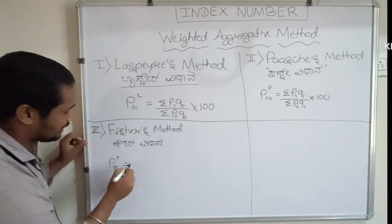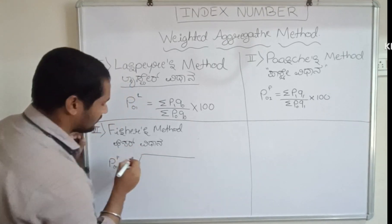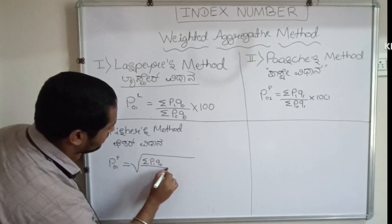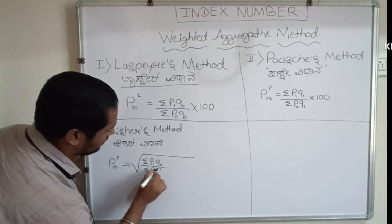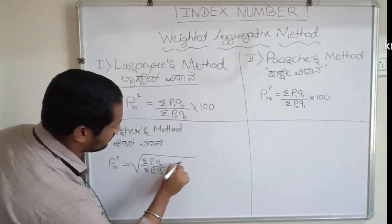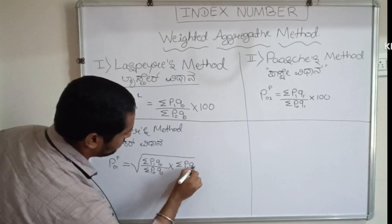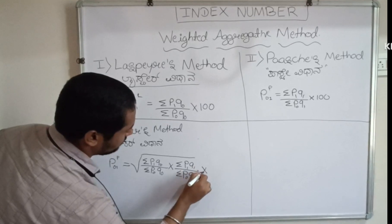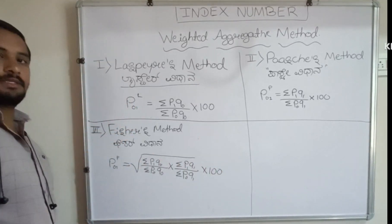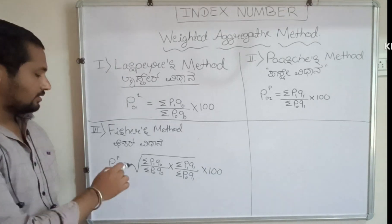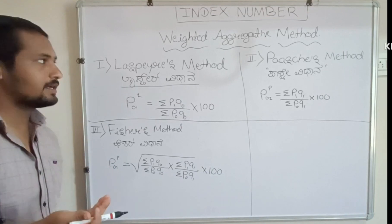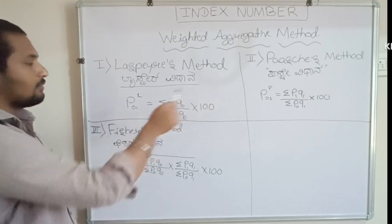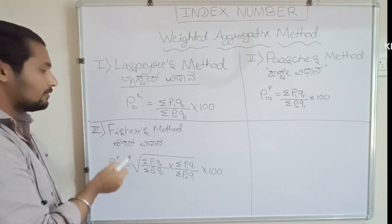This is the root of sigma p1 q0 divided by sigma p0 q0, into sigma p1 q1 divided by sigma p0 q1. This determines the root of sigma p0. This is Fisher's method.